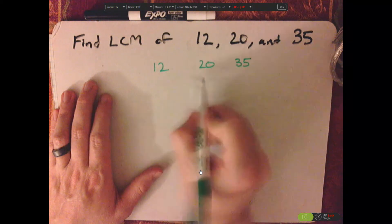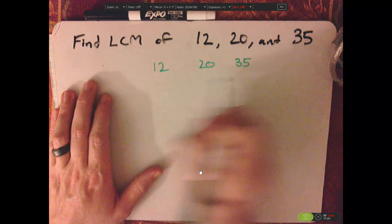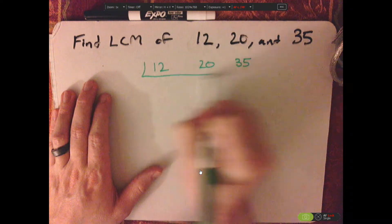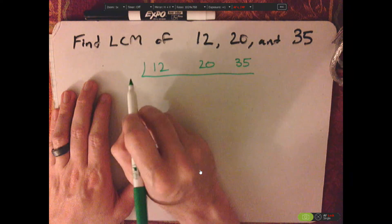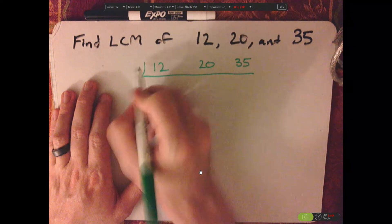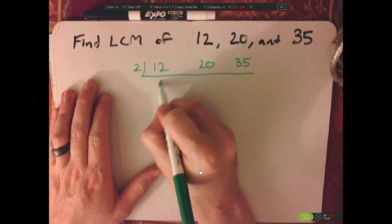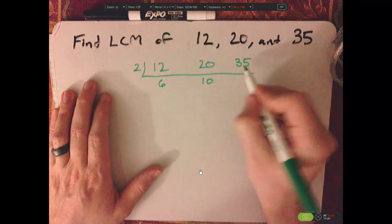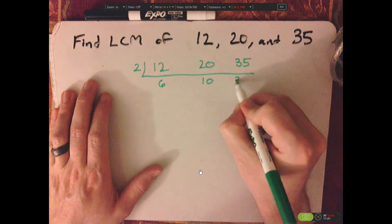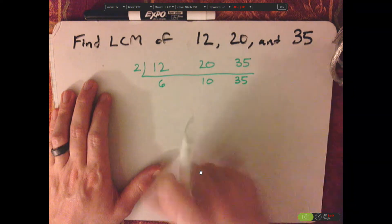So, for example, if I look at these, I know that these two are divisible by 2, so then I can divide these by 2, so that would be 6, 10, and then just leave the 35 as is.